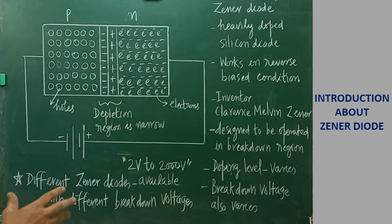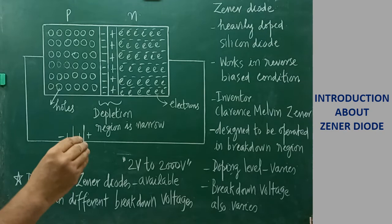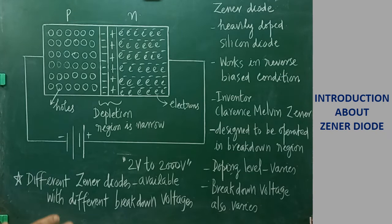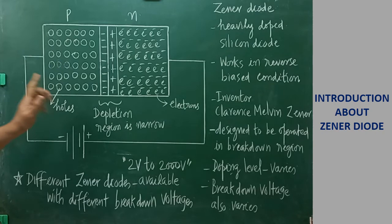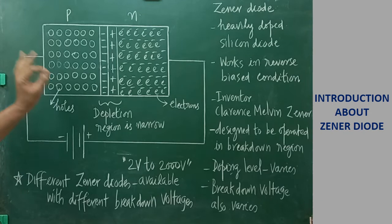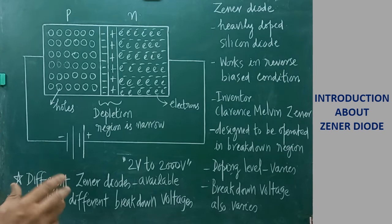In the physics lab, for experimental purposes, we use Zener diodes with a breakdown voltage of 6 volt or 4.7 volt — very low breakdown voltages for plus 2 practical purposes. The basic idea is: it is a heavily doped reverse biased diode called a Zener diode, working only in reverse biased condition. Each Zener diode has its own breakdown voltage, and the breakdown mechanism can be understood with the help of a graph.